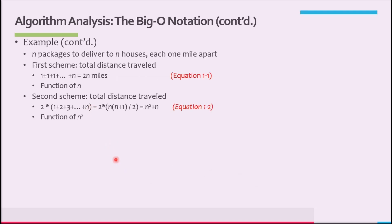Suppose there are n packages to be delivered to n houses, and each house is 1 mile apart. If the packages are delivered using the first scheme, the total distance traveled is 1 + 1 + 1 ... n times, equals 2n miles — equation 1-1. For the second scheme, the distance traveled is 2 times (1 + 2 + 3 + ... + n) = 2 × n(n+1)/2, making it n² + n — equation 1-2.